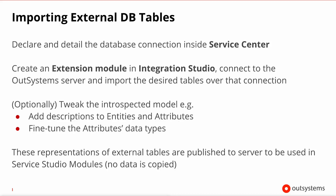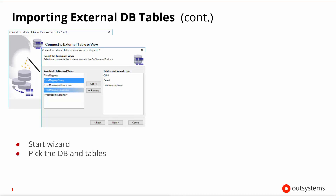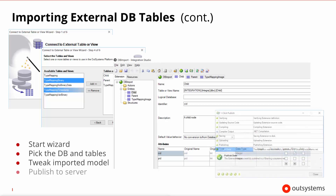You might want to tweak certain characteristics of the imported module — for example, fine-tuning data types that were inferred wrongly or adding descriptions to the entities and attributes that will be created. It's important to note that these imported external tables don't get their data copied in any shape or form to the local database. In runtime, you'll actually be querying directly over the database connection that was defined. So the steps inside Integration Studio are: you start the wizard, you pick the database and the tables you're interested in, they appear in Integration Studio and you can tweak any of the properties of the imported module, and upon publishing on the server they become visible to your modules.